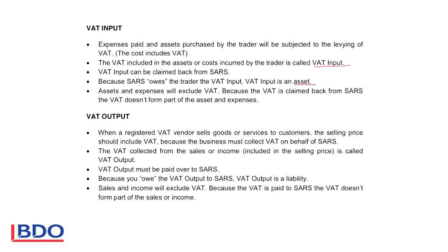The assets and expenses that you record in your ledger accounts or in the financial statements will exclude VAT. So no expense in your income statement will include VAT — it excludes the VAT. Because the VAT is claimed back from SARS, the VAT doesn't form part of the cost of the asset and the expense because you receive it back from SARS.